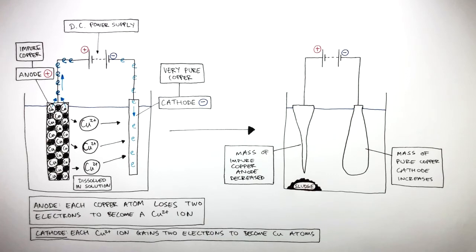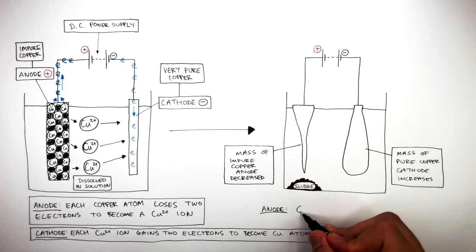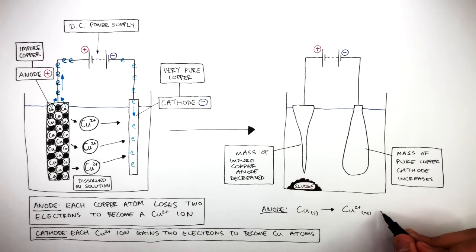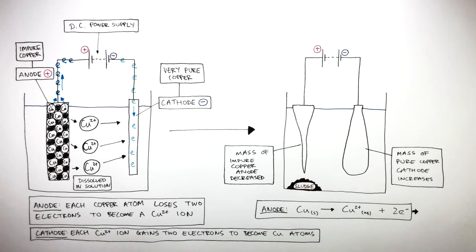We can use a half equation to summarize what has happened at the anode. Cu(s) reacts to form Cu2+(aq) plus two electrons. Because two electrons have been lost, this is oxidation.